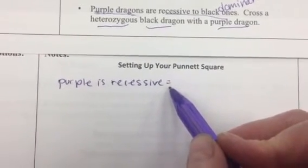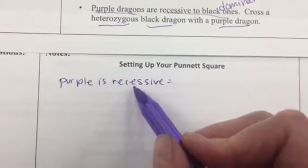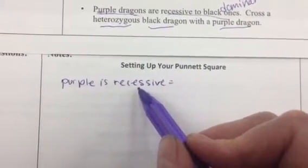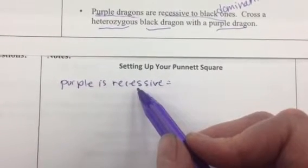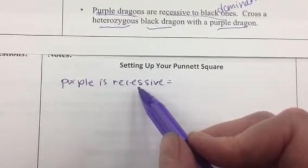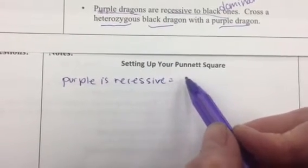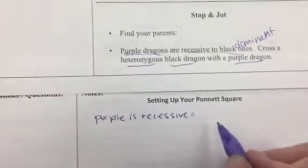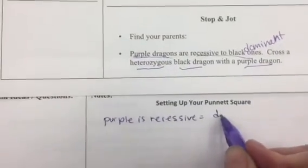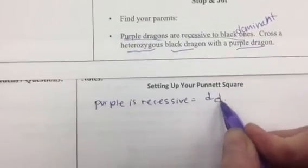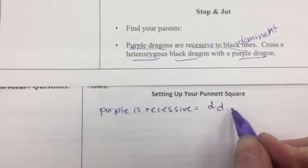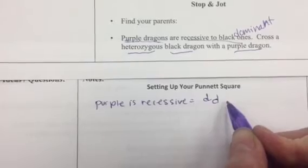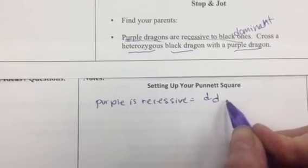And if it's recessive, we know that it's going to show for the homozygous recessive genotype. So that will be little d, little d. That's our only option for recessive.